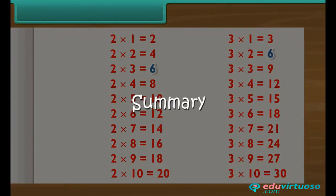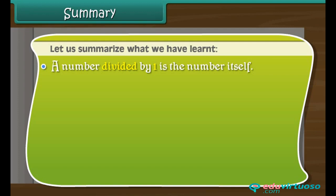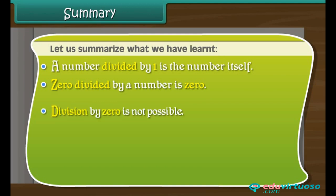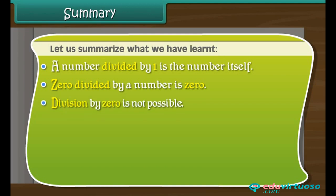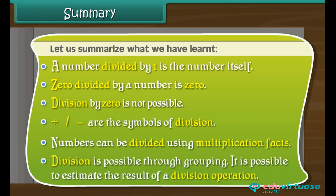Summary. Let us summarize what we have learned. A number divided by 1 is the number itself. 0 divided by a number is 0. Division by 0 is not possible. These are the symbols of division. Numbers can be divided using multiplication facts. Division is possible through grouping. It is possible to estimate the result of a division operation.